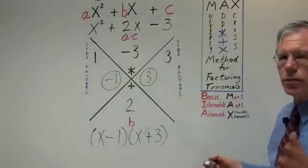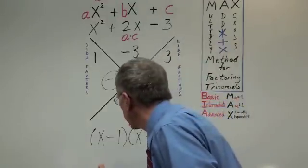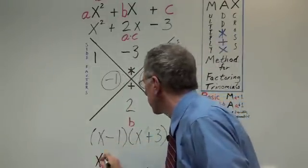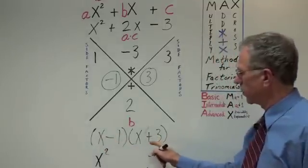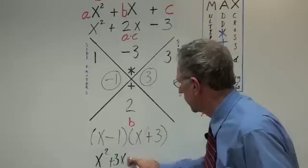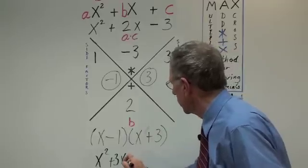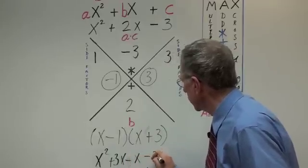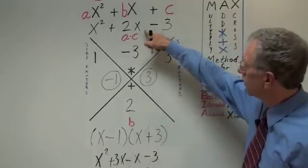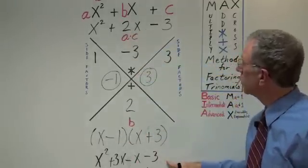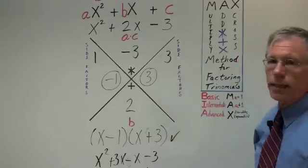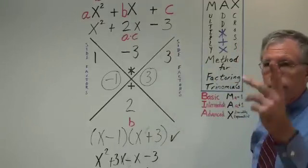Now, let's use FOIL here to check this out. FOIL, x times x, x squared, x times 3, 3x for the outer. Whoops. I put a plus there. Shouldn't. It's a minus. Minus x, minus 3. Okay, now let's take a look here. 3x minus x gives us 2x. We already have the other two terms. So, once again, Max was able to handle a problem with a negative just like that. Let's keep going.